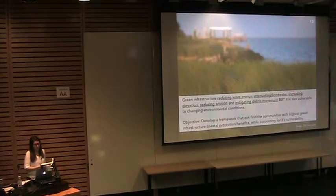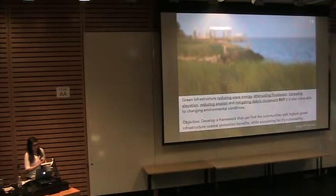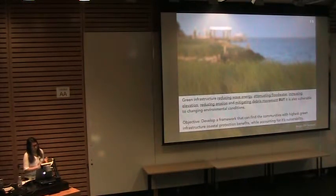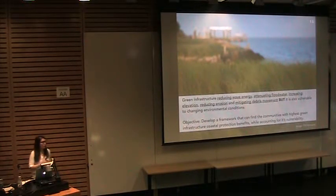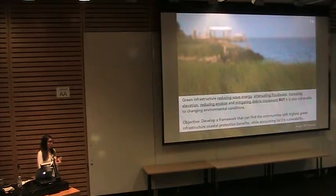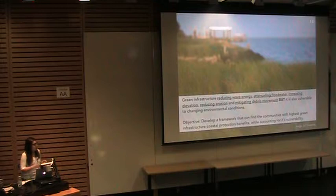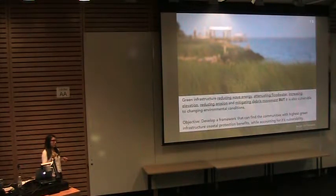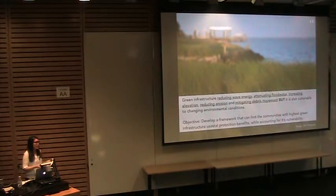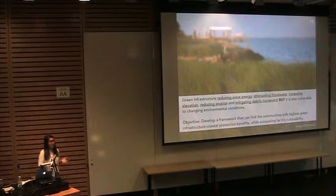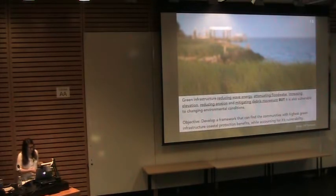There is now mounting evidence that green infrastructure provides important coastal protection benefits by reducing wave energy, attenuating flood water, increasing elevation through aggradation, reducing erosion, and mitigating debris movement. However, we know that green infrastructure is also very vulnerable to changing environmental conditions — either due to climate-related events or human action and sometimes inaction at the coast. This vulnerability is very critical because it directly impacts green infrastructure's coastal protection benefits. What is striking is that not a lot of studies have investigated this vulnerability in the same context as its coastal protection benefits.